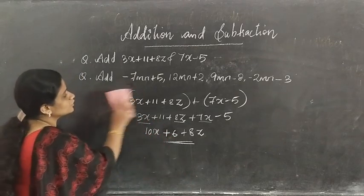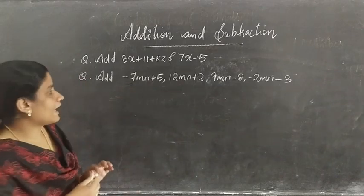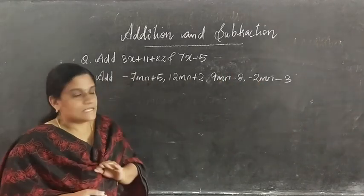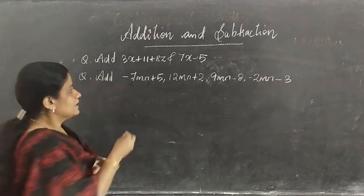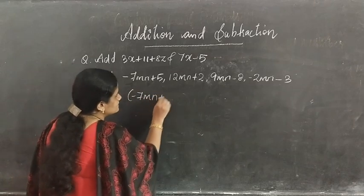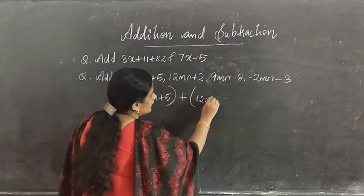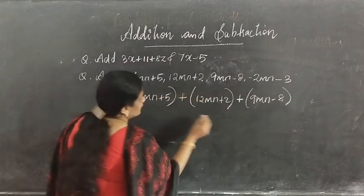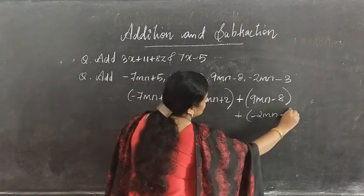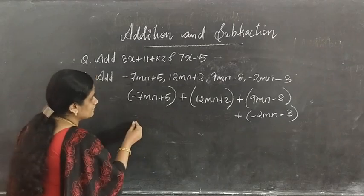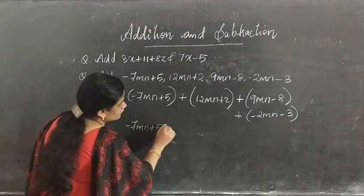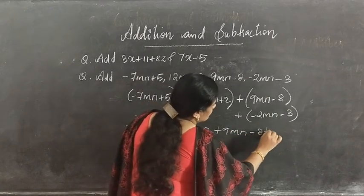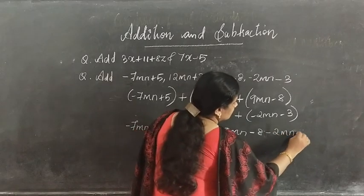Now we will see how to do the second question. Here we have to add 4 expressions. Since it is addition, we can add all together. We write: negative 7mn plus 5, plus 12mn plus 2, plus 9mn minus 8, plus negative 2mn minus 3.